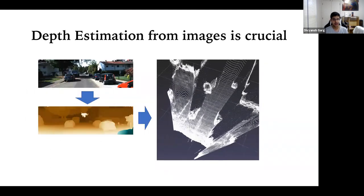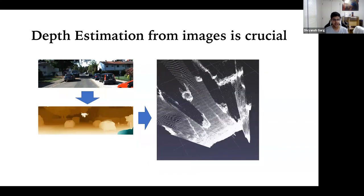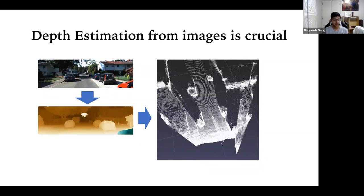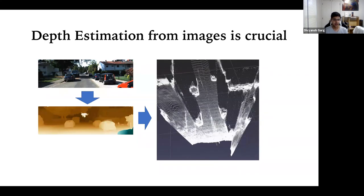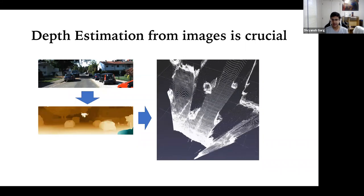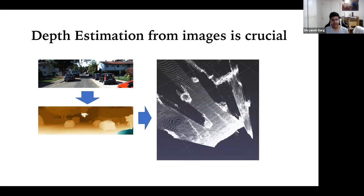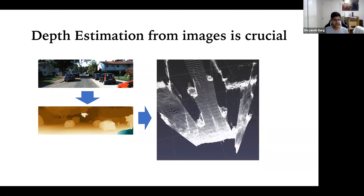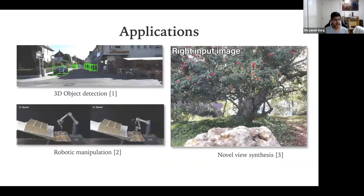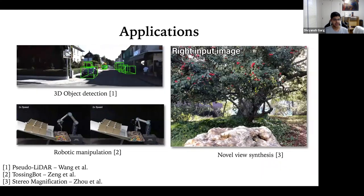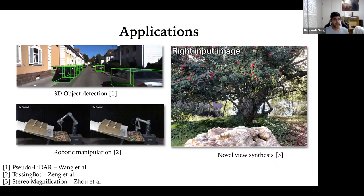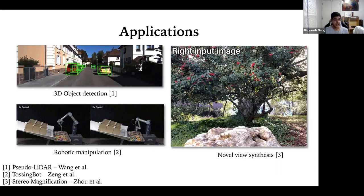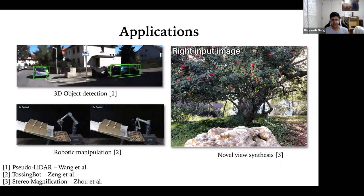Depth estimation from images is a very crucial task — it's essentially how you can learn to reason about the world in 3D. When you have human eyes, you can only get 2D images, but you want to perceive the depth. That's how we convert our 2D input to a 3D understanding of the world. This is very important for applications such as autonomous driving, where we want to detect cars and understand how far objects are.